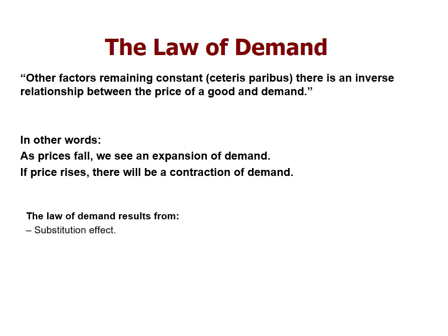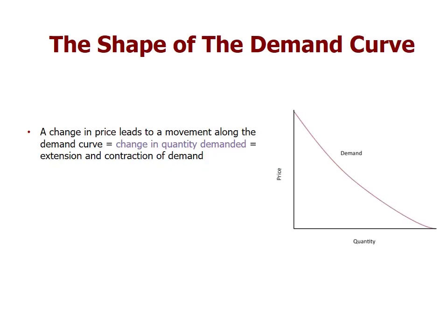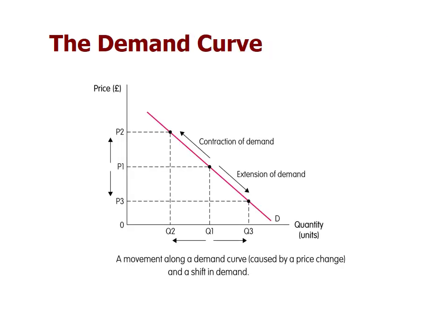This comes from the substitution effect — you consume more of the good that is cheaper, substituting towards that cheaper good. There is also the income effect: as you earn more money, you consume more of goods you like and less of goods you don't. The typical demand curve shows this inverse relationship. Changes in price lead to a movement along the demand curve — an extension or a contraction.